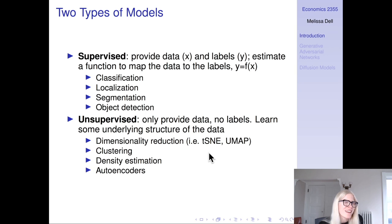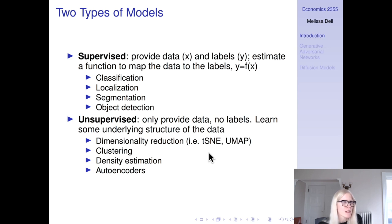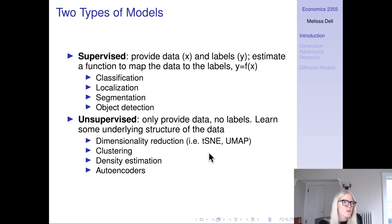Starting with a very broad view, in general there are two types of models. There are supervised models where we provide data and labels and estimate a function to map the data to the labels. We've talked about things like classification, localization, segmentation, and object detection. You might put self-supervised methods under this too, where you're able to get your labels directly from the data.